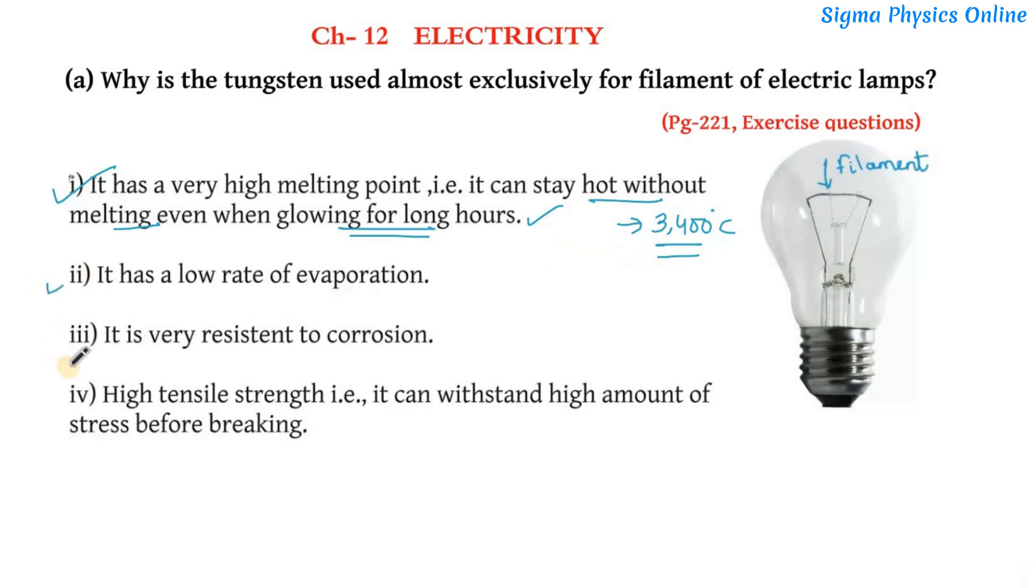Second, it has a low rate of evaporation. In comparison to other metals, tungsten has a lower rate of evaporation. Third, it's very resistant to corrosion. Normally metals have the property to corrode when exposed to air, but tungsten is a metal which is very resistant to corrosion. That's another reason for choosing it as a filament of electric lamps.